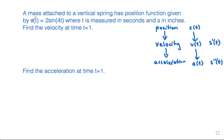Since we're given the position function and want to find the velocity at time t = 1, we need to take the derivative. So we're looking for s'(t), which is also v(t).